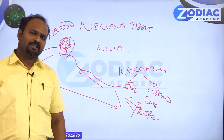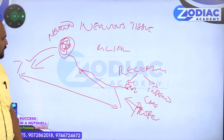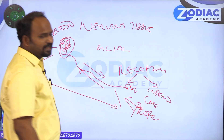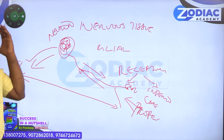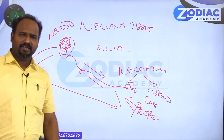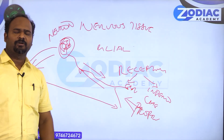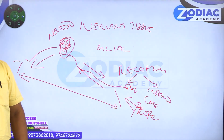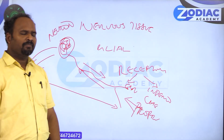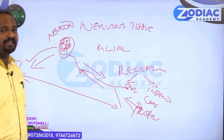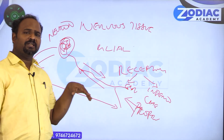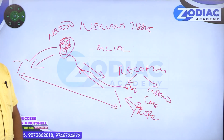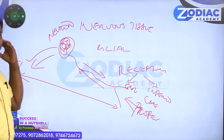Exteroceptors seen in the outer part of the body include touch receptors — fine touch, crude touch, pain receptors, and temperature receptors. Impulse conduction happens in two directions: afferent impulse, which is received and reaches the cell body, and efferent impulse, which comes out from the cell body. The afferent impulse is a sensory impulse; the fiber carrying it is called a sensory fiber, and a bundle of sensory fibers is called a sensory nerve.